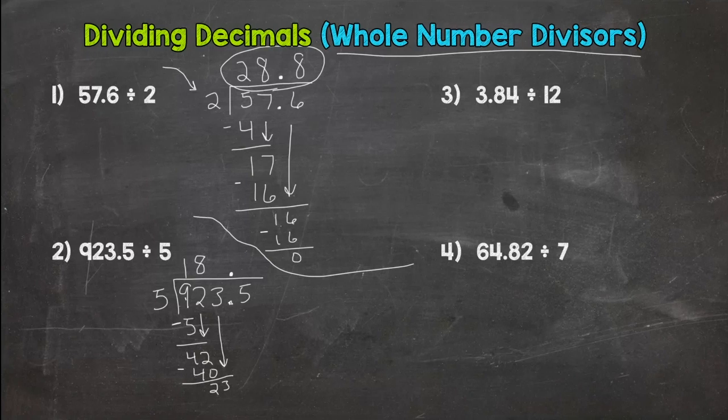All right. 23 divided by 5. How many groups of 5 out of 23? 4. 4 times 5 is 20. Running out of room here. You get 3. Bring down my 5. And then wrap it up with 35 divided by 5, which is 7.